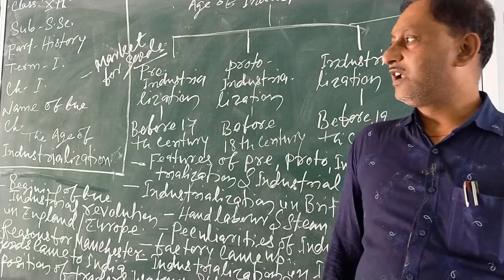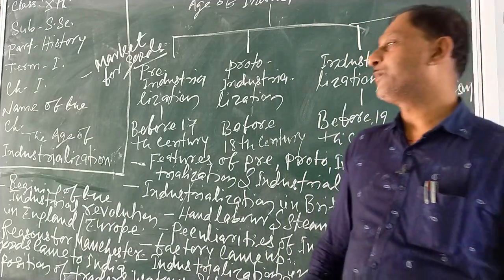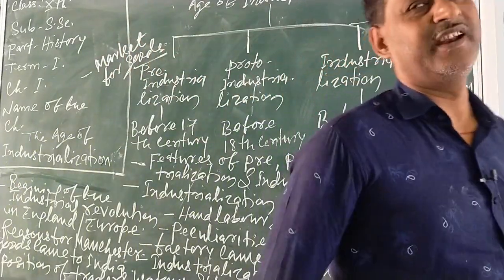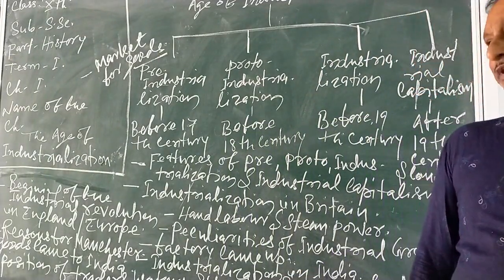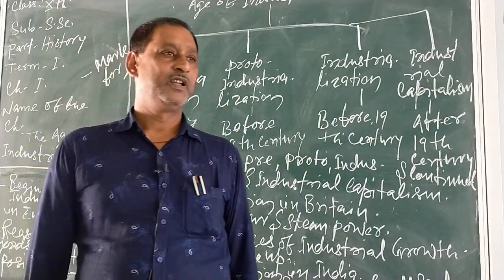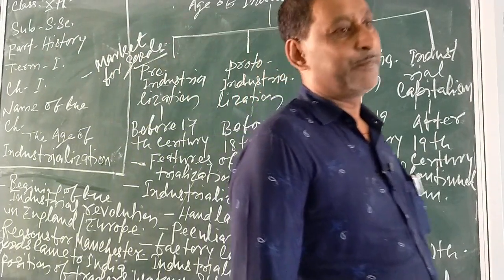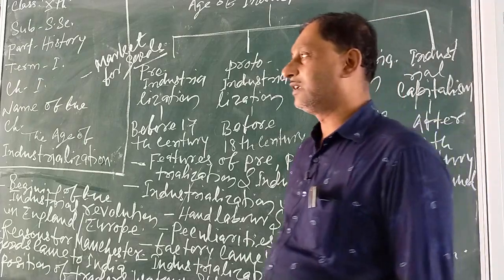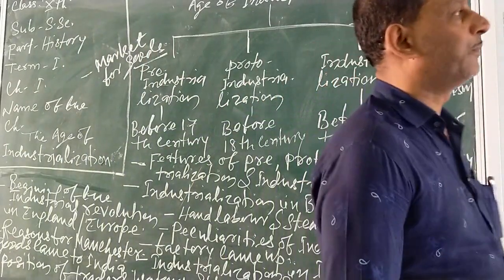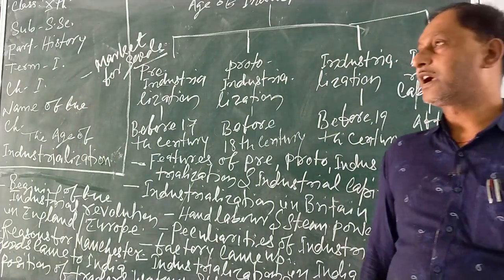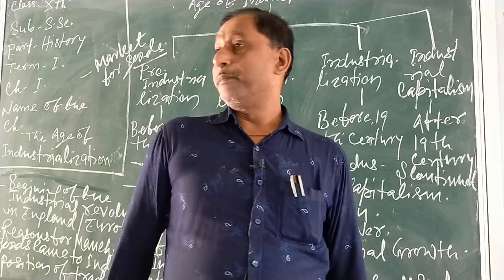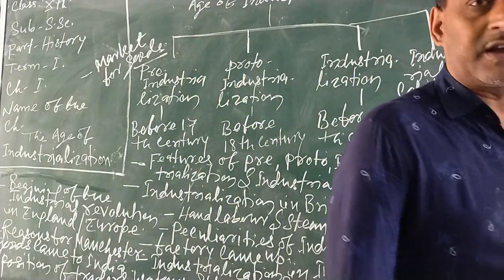Workers came from the districts around where the factory was started. For example, in Bombay, workers came from the nearby Ratnagiri district, Dharavi and other slum towns with large populations. In Kanpur, workers came from the countryside. In Kolkata, workers came from Bihar, Bengal and Orissa.